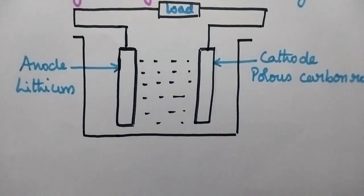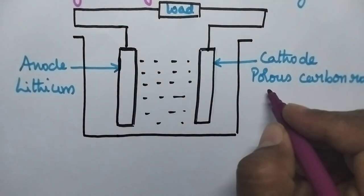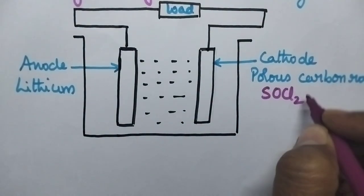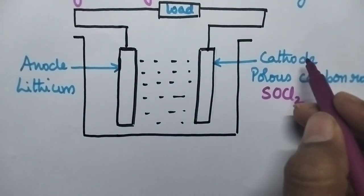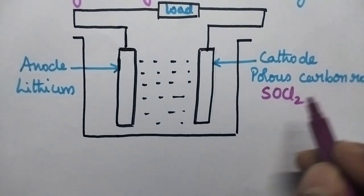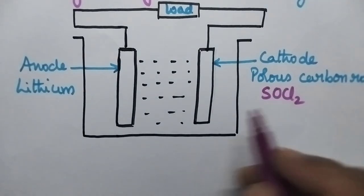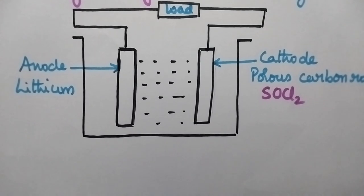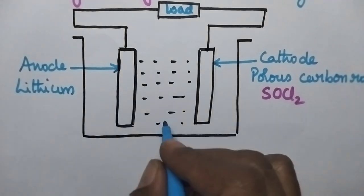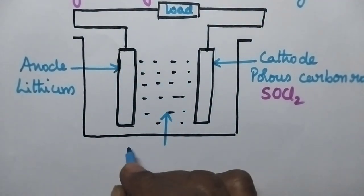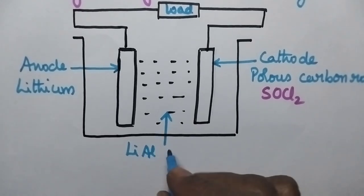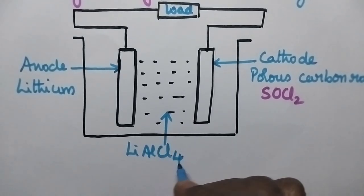The cathode is made up of porous carbon rod containing thionyl chloride. The electrolyte is lithium aluminum tetrachloride.